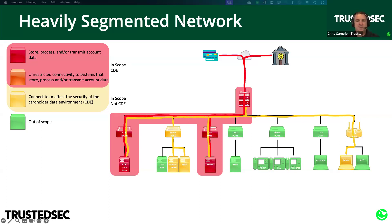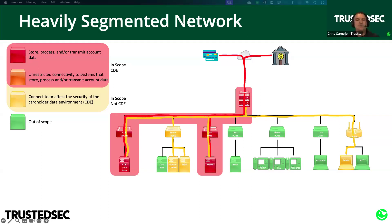Remember that systems only get pulled into scope if they connect to or affect the security of the CDE — not the broader category of in-scope systems. Even though the domain controller and SIM may be providing security for the other database, the email server, or the CEO, they're not dragging those other systems into scope because they're not CDE. That keeps our scope nice and small.